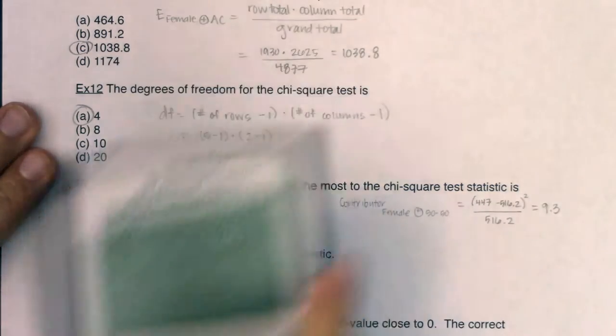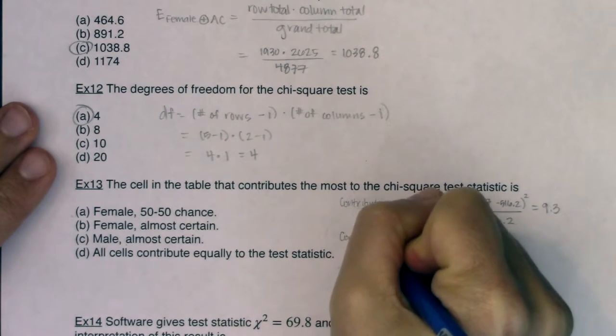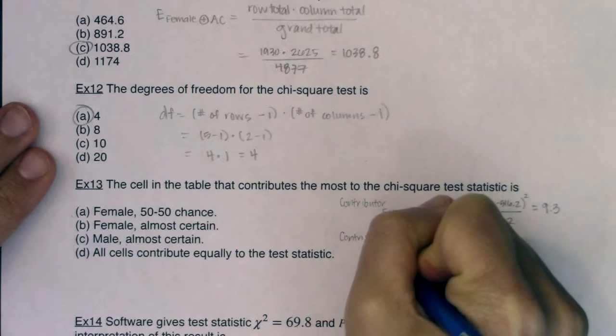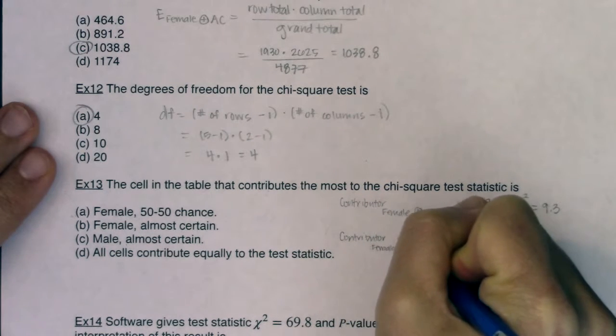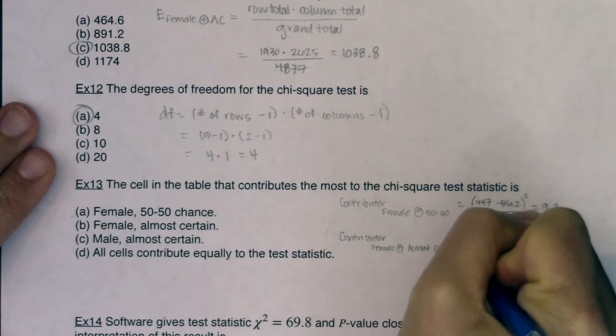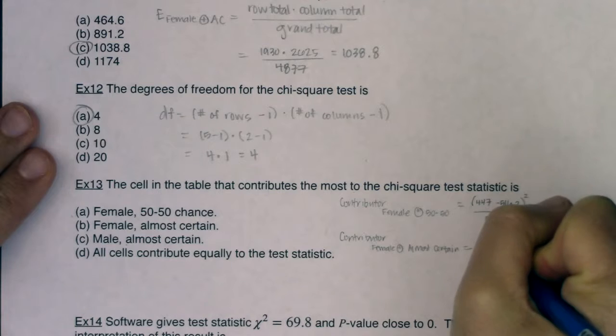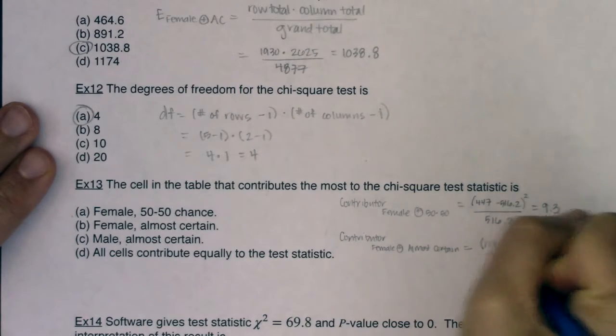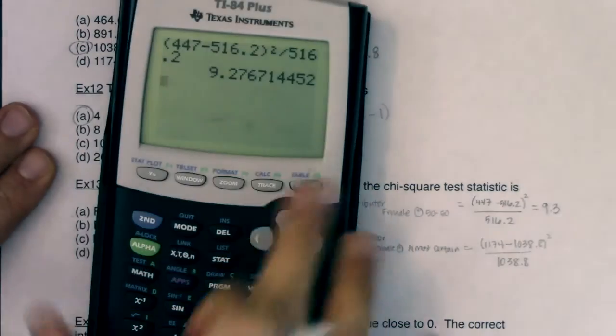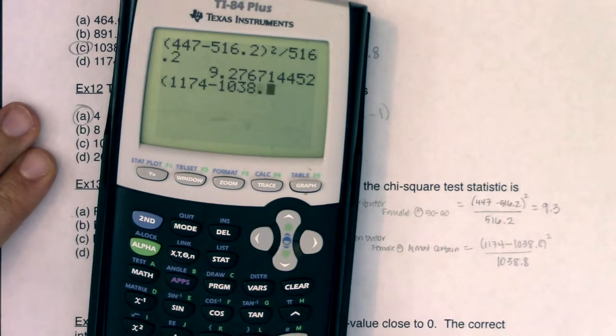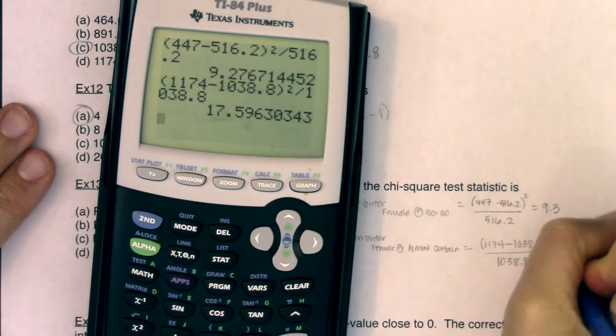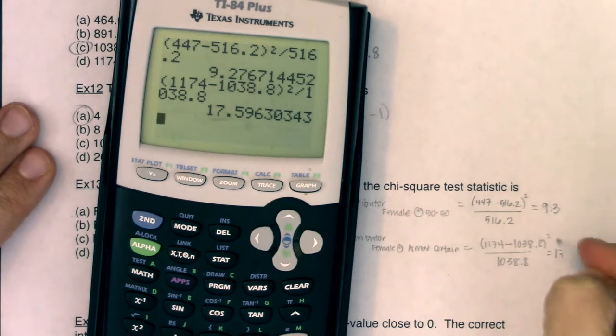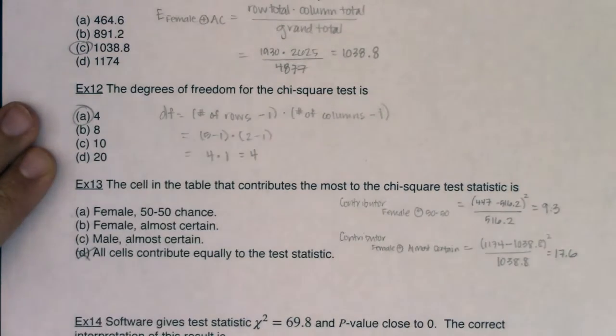So 447 minus 516.2, let's square it, divide it by 516.2. So that contributed about 9.3 to that overall test statistic that was around 69.8. So that's a pretty big contributor, but let's see about female. So we observed 1174. We expected 1038.8. We're going to square that difference and put it in ratio to 1038.8. Looks like, oh, that's even larger. So we've got 17.6 here. As soon as I see that these two answers are not the same, I know D is rolled out. That can't be the answer.